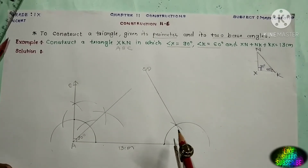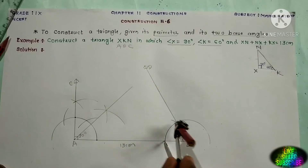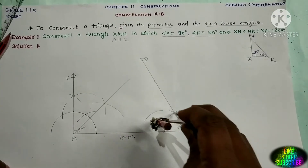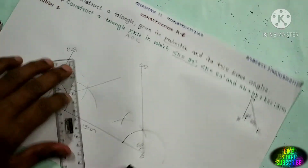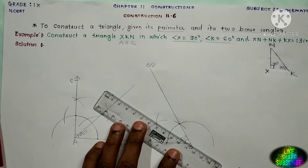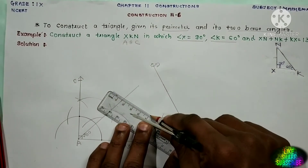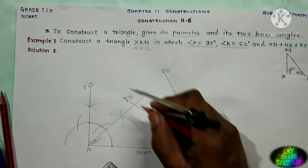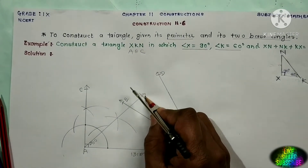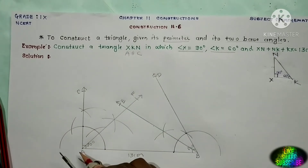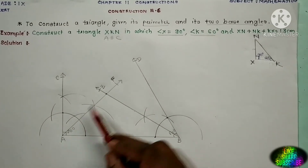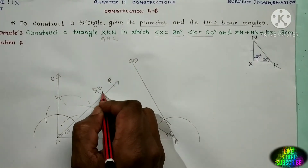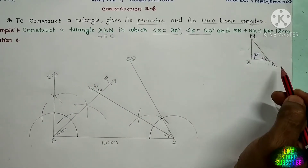Similarly, bisect this 60 degree at point B to get 30 degree. Choose this distance and mark one arc like this to get the bisector. Draw one ray — let us mark this point as E and this ray as BF. Both bisectors, ray AF and ray BE, should meet at point N. This is the first point of triangle NXK.